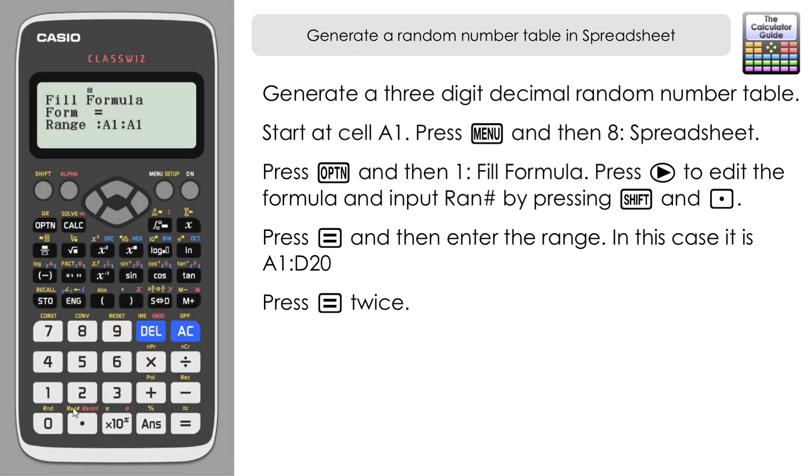The limits to that will be between essentially zero and one, so it's a random three decimal place number between zero and one. Again I'm going to do the range A1 to D20, so I'll just alter that. Press Equals.